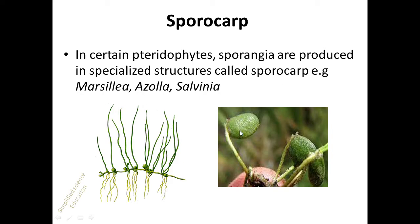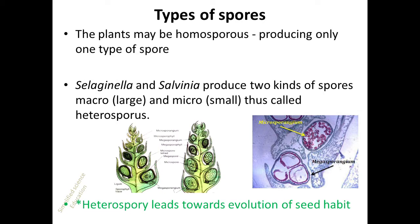In certain plants, sporangia are produced in a specialized structure called the sporocarp, which is common in aquatic species, for example Marsilea, Azolla, and Salvinia.